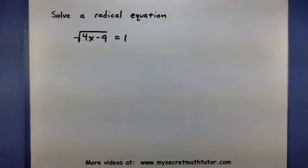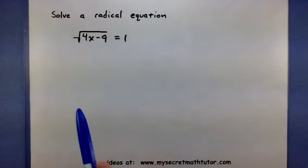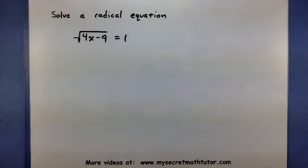This transforms it usually into something much nicer that you can solve. So in our problem here, I have the square root of 4x minus 9 is equal to 1. And my radicals are already all alone on one side of the equal sign.